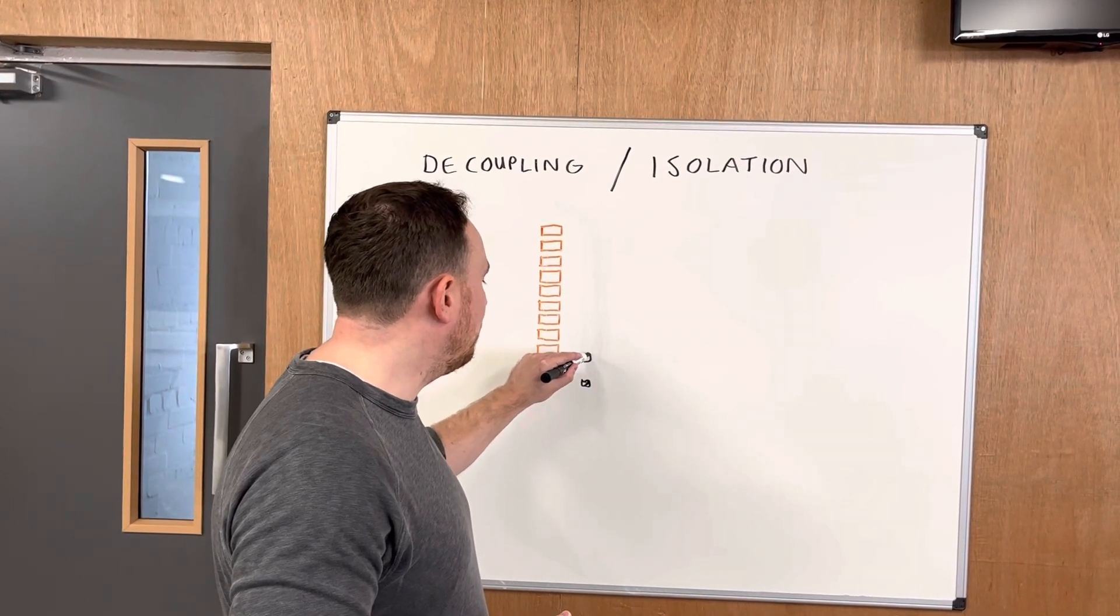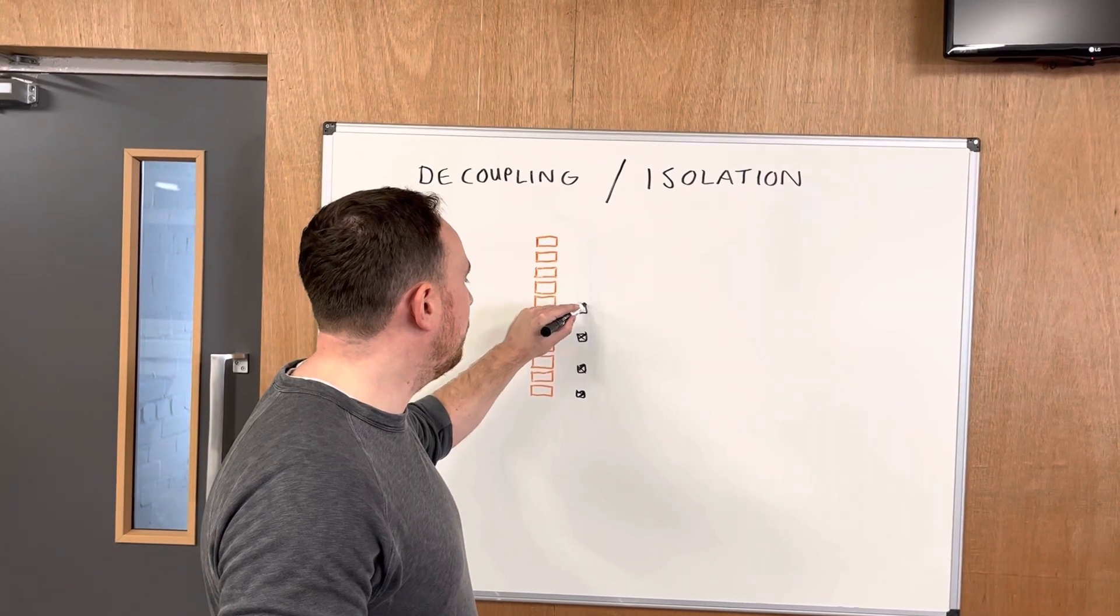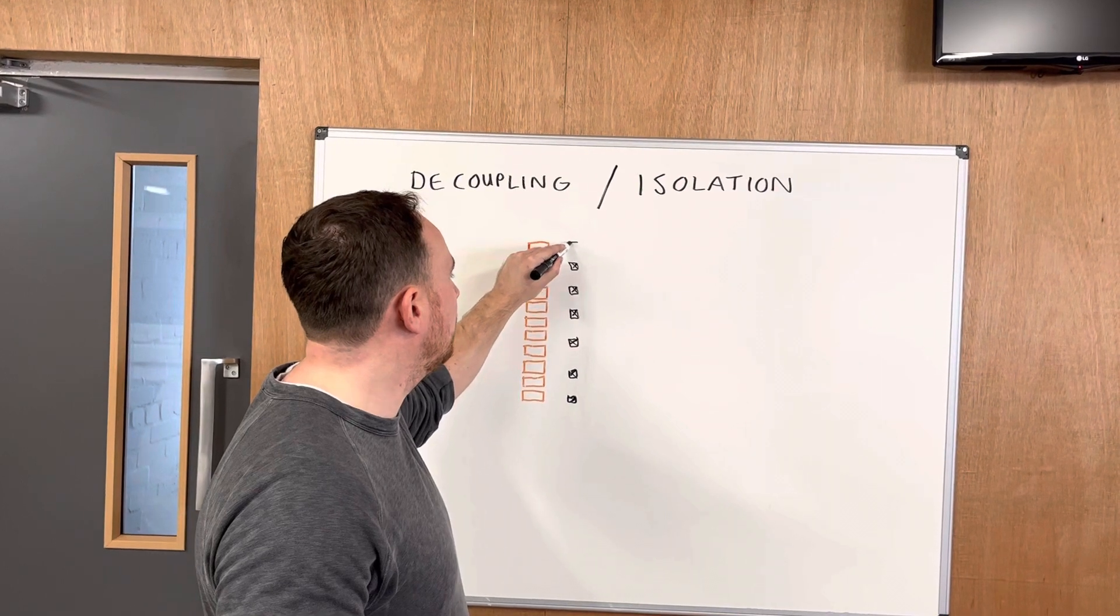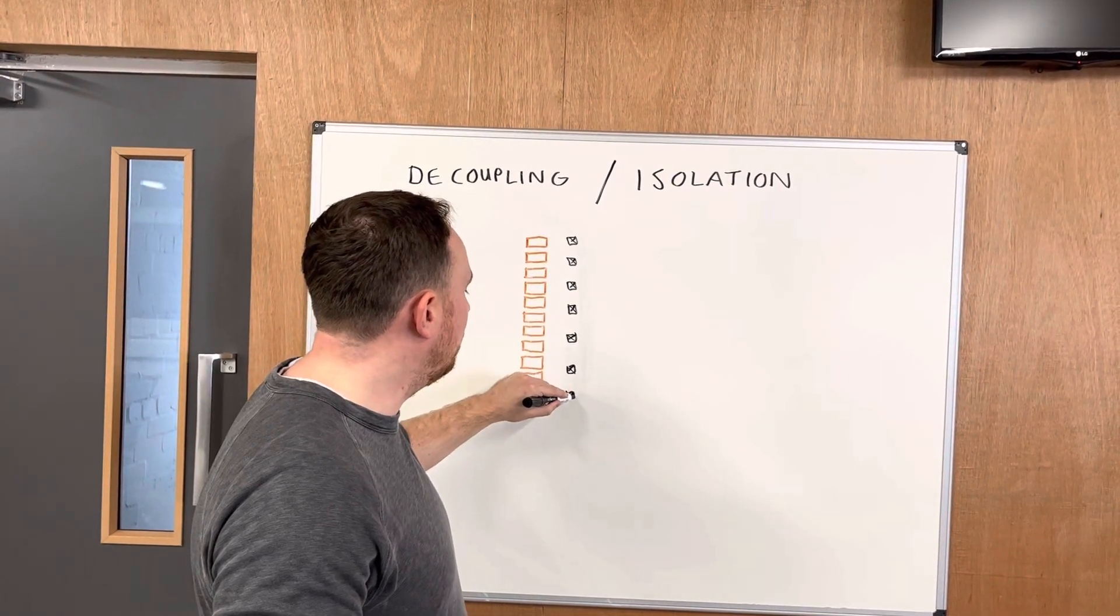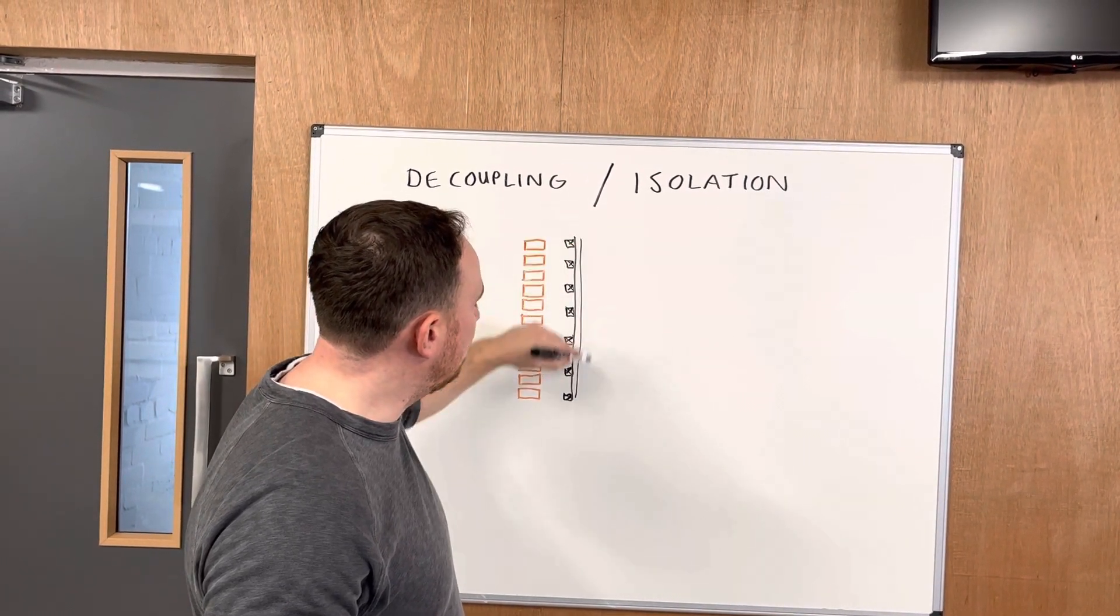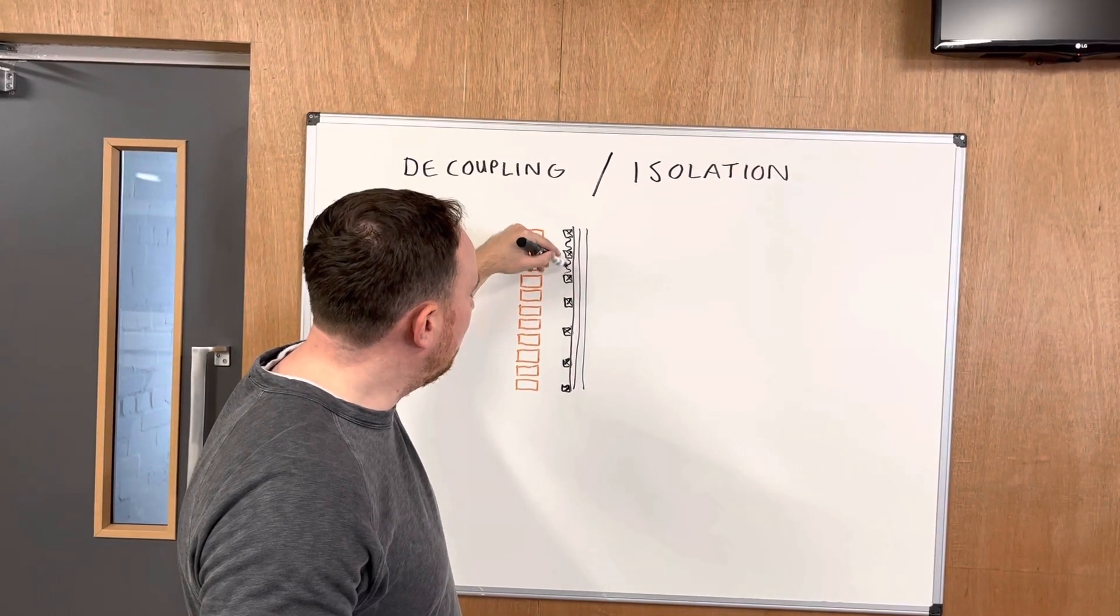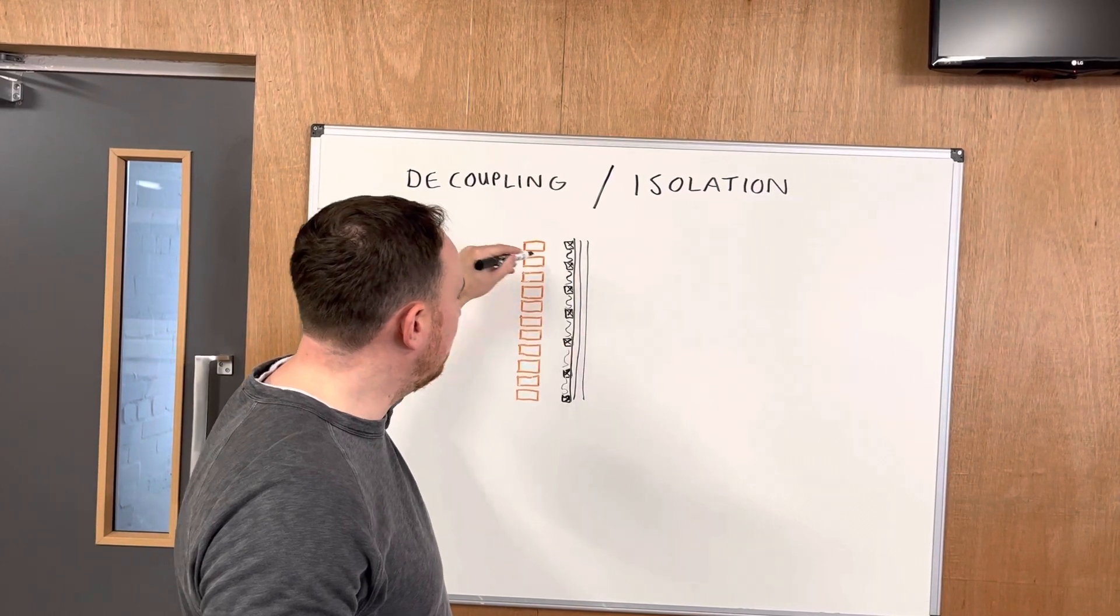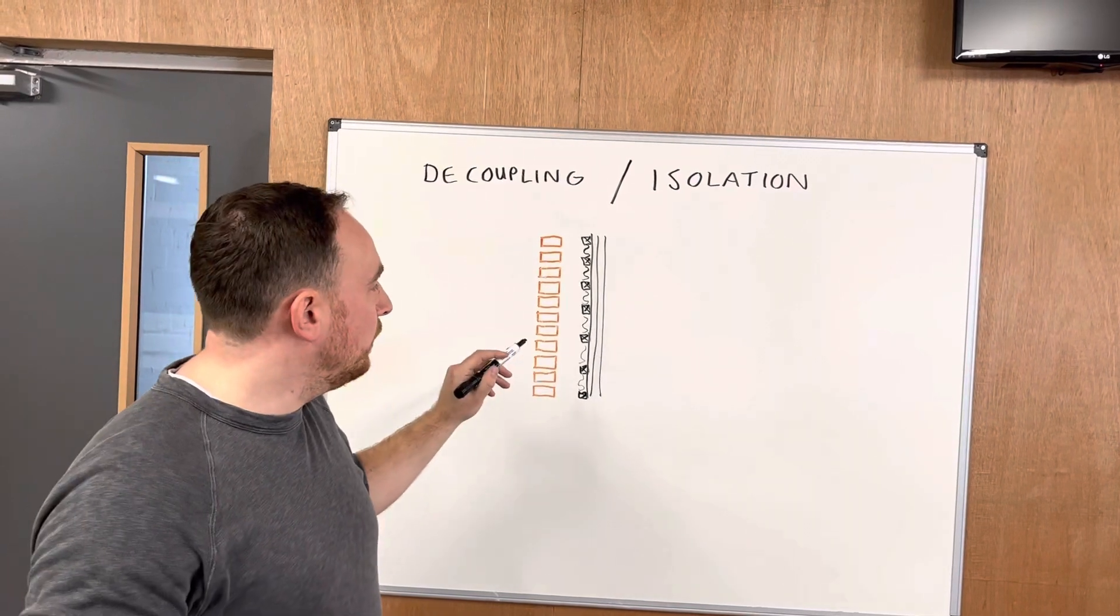If the orange is representing our existing brickwork, we can build an independent lining in timber or metal frame. We can load our mass boards onto the face of that. We can ensure to insulate within the void but not fully fill to leave an isolated cavity.